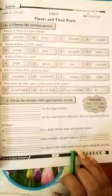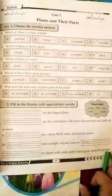Number five, blank are plants with weak stems which grow along the ground. The answer is creepers. That's all for today, thank you.